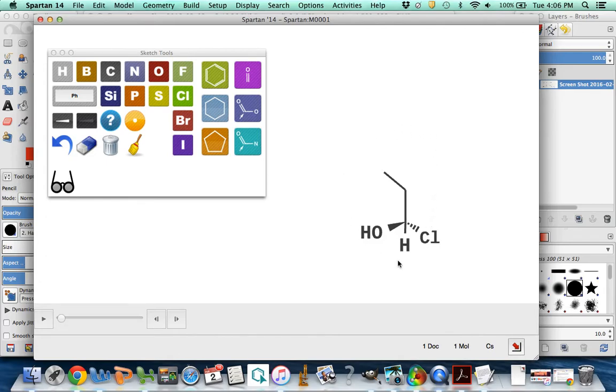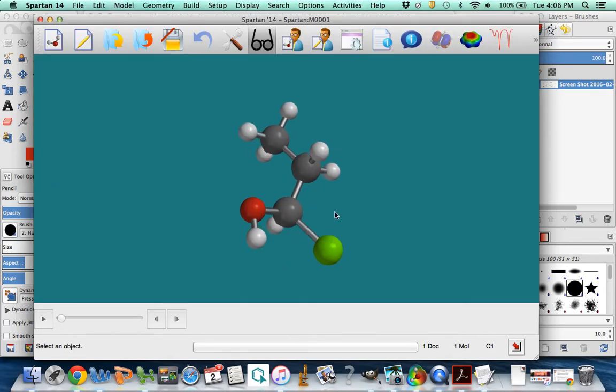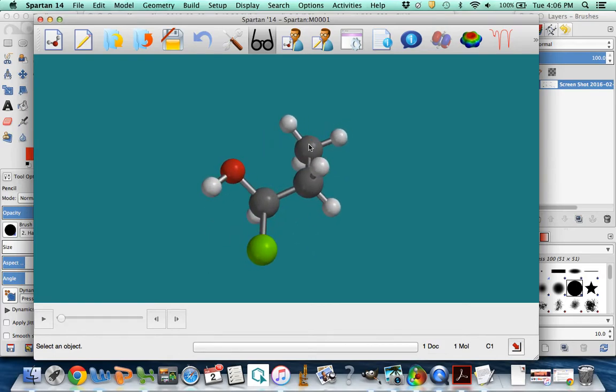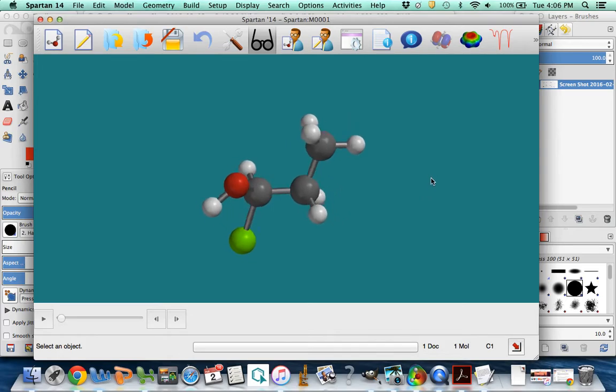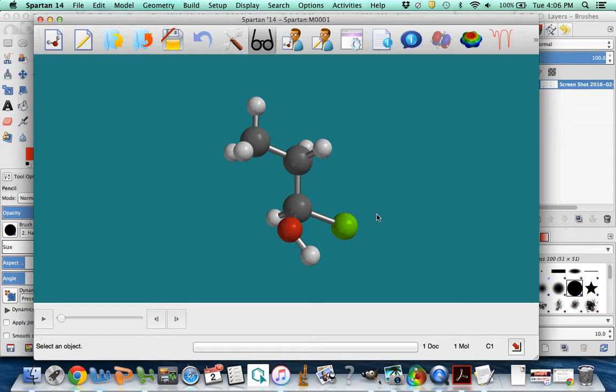We can also visualize the three-dimensional nature of these chiral carbons or any tetrahedral carbon by using our iSpartan program. So if we look at this molecule in three dimensions, we can rotate it, and we can see that all carbons in this molecule are tetrahedral in geometry, but this is the only chiral carbon right there because it has four different things attached to it. Now let me try to convince you how this molecule's chiral carbon really defines a type of stereochemistry where there's different versions of it.